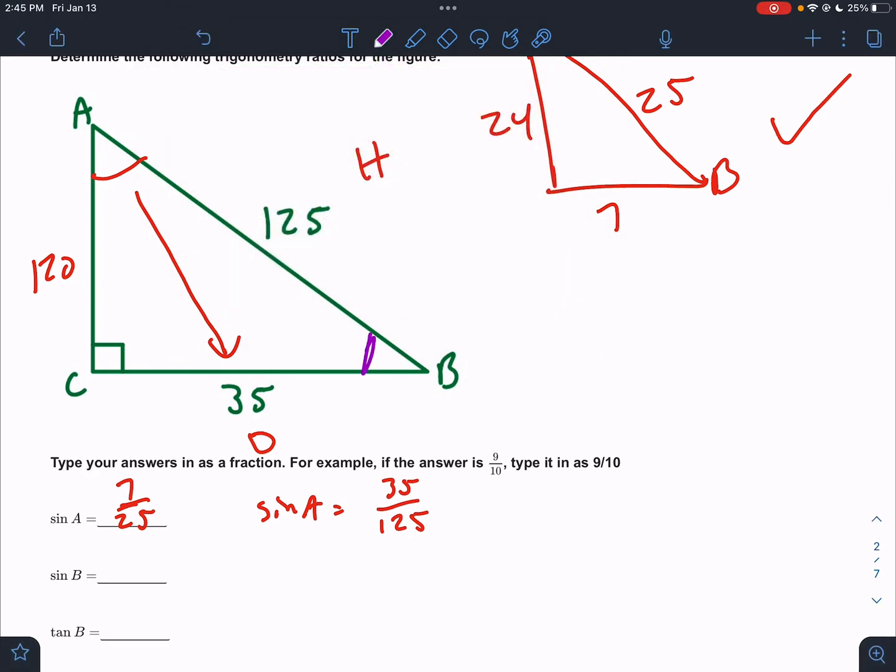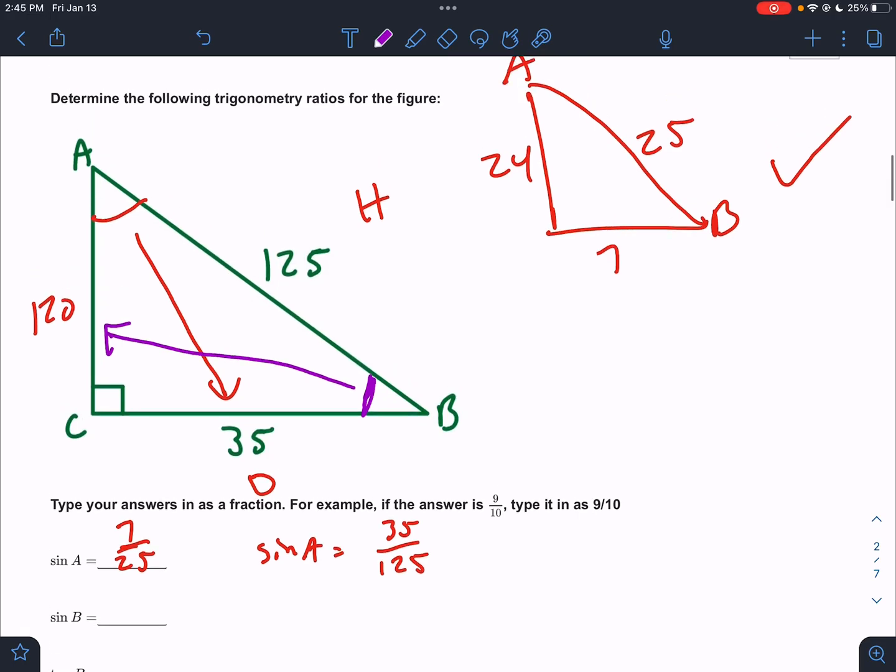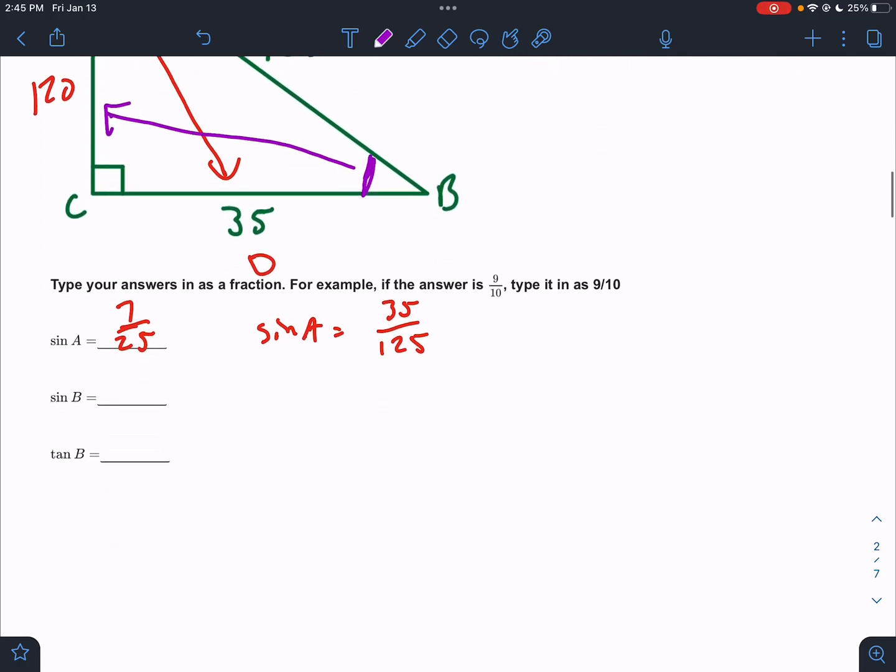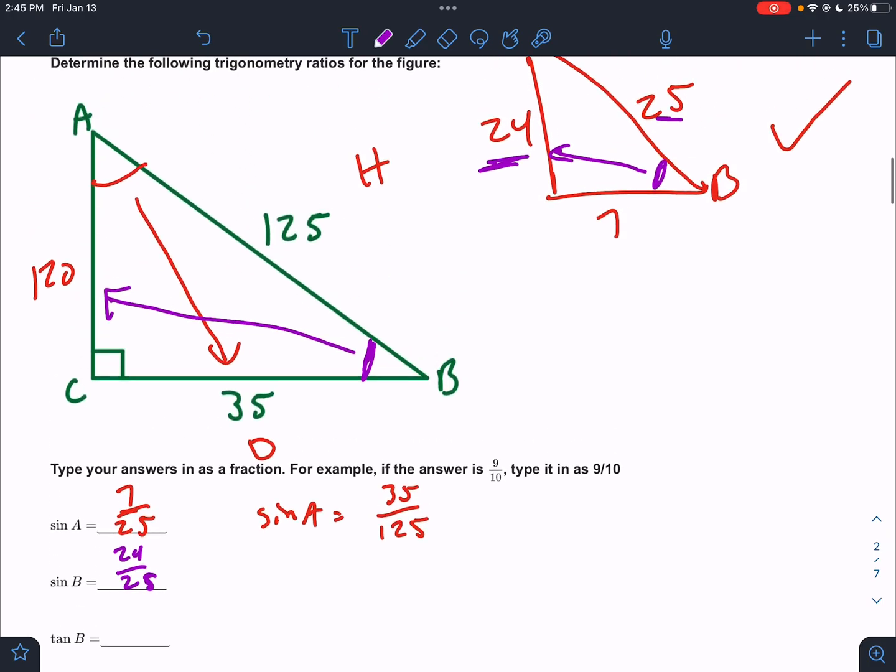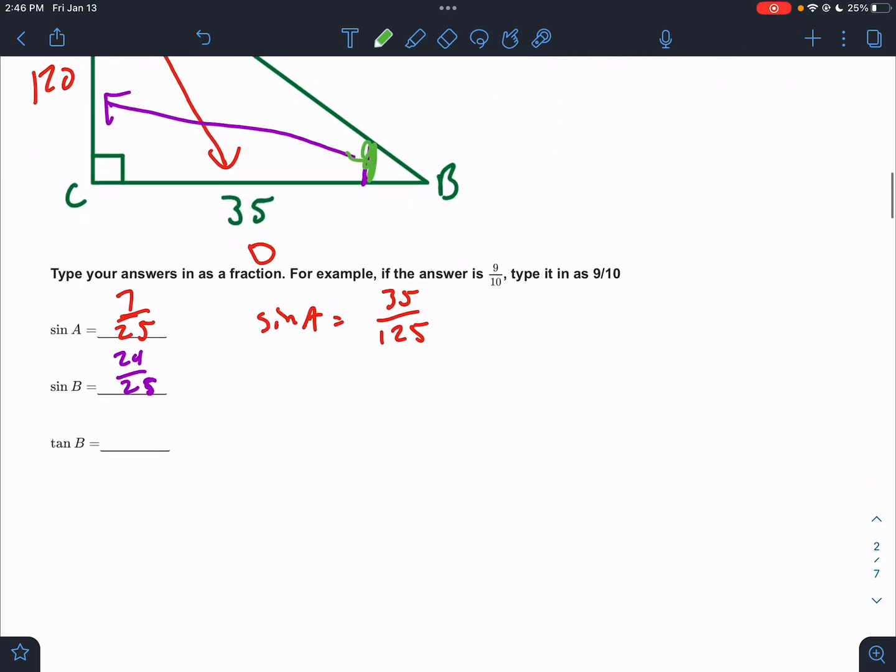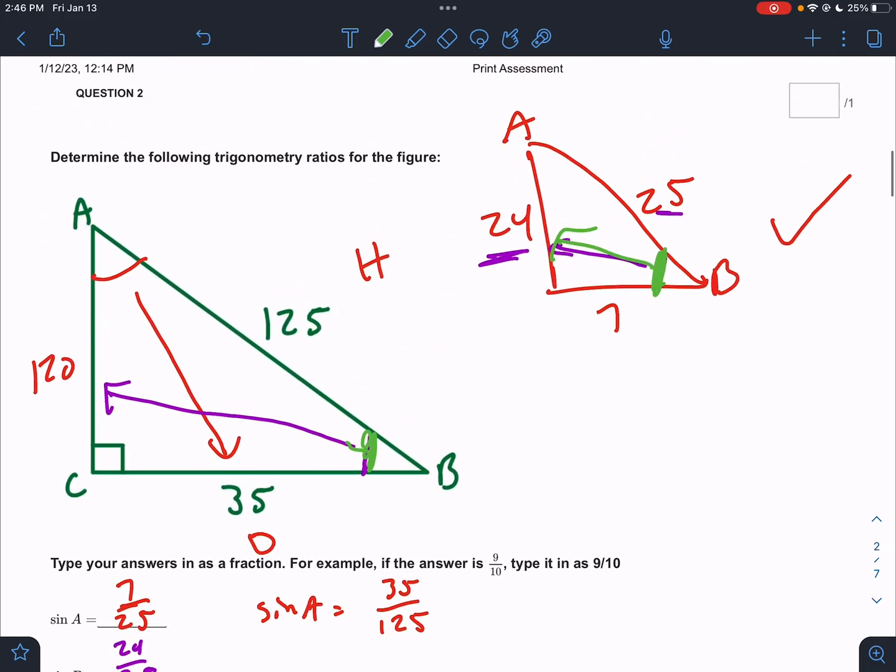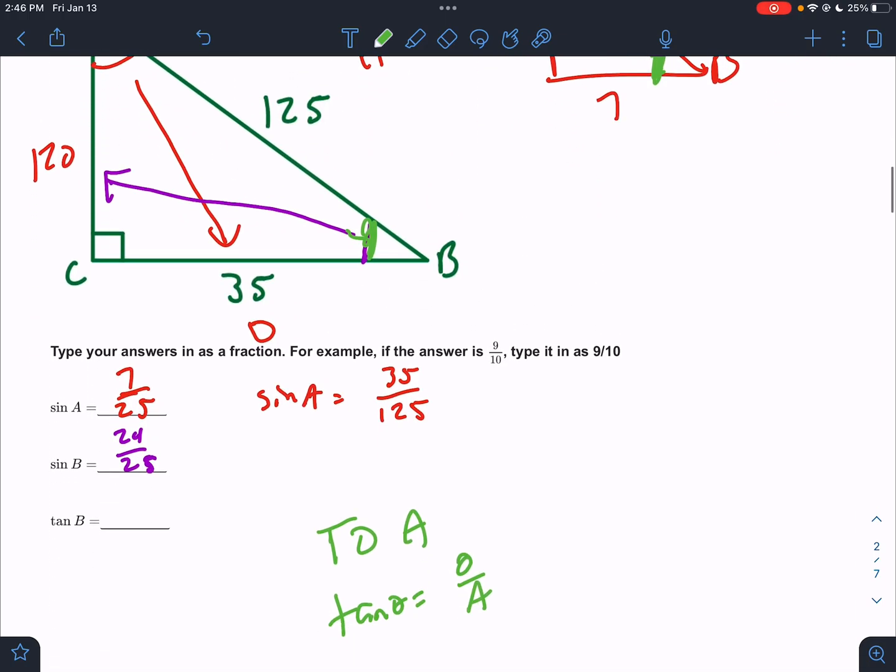What about the sine of angle B? Well, angle B, opposite would be 120. Hypotenuse would be 125. But I'm going to use the reduced version. Here's angle B. Opposite is 24. Hypotenuse is 25. And then the tangent of angle B, again, it's easier to use the reduced one. Here's angle B. We could do it over here, but they're not reduced. But opposite, I didn't write that formula down. Tangent is the TOA part. That is tangent equals opposite over adjacent. So that is 24 over 7 if you reduce the numbers.